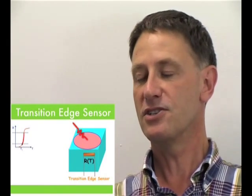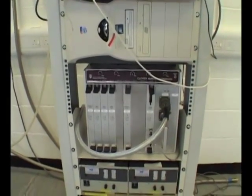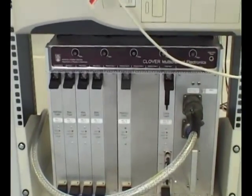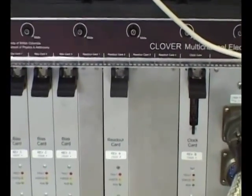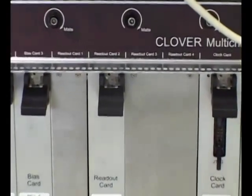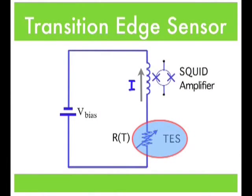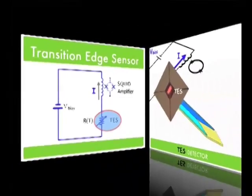Transition edge sensors are now being made into large imaging arrays, and multiplexing is achieved using SQUIDs. Very complicated and large SQUID multiplexing circuits are built. You can see the whole technology here — both the sensor itself, but also the multiplexing and readout electronics. It's all done in superconductors.